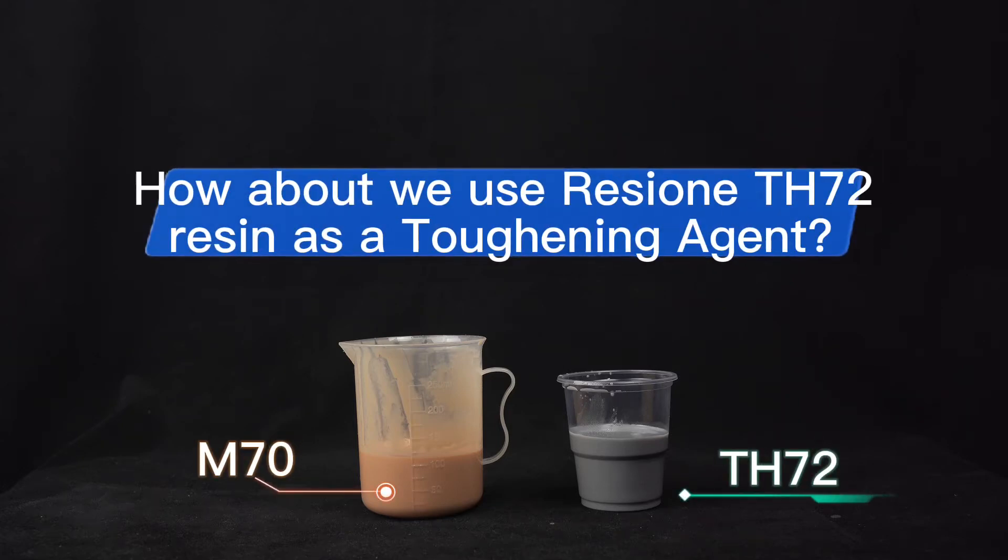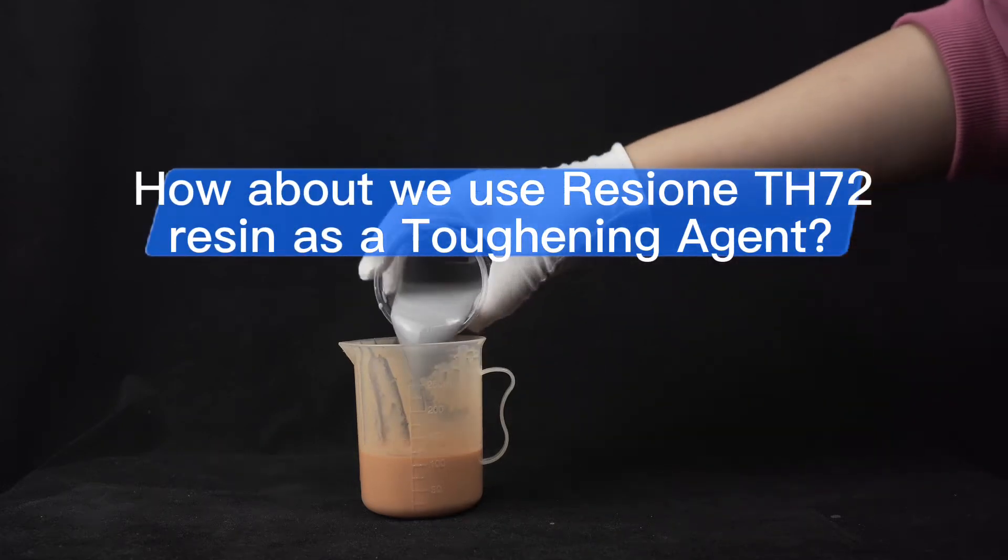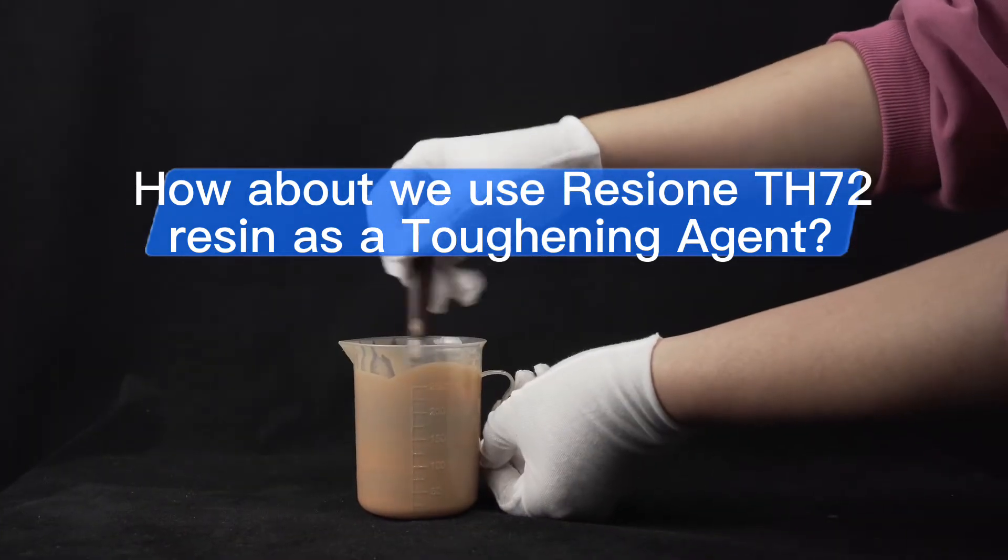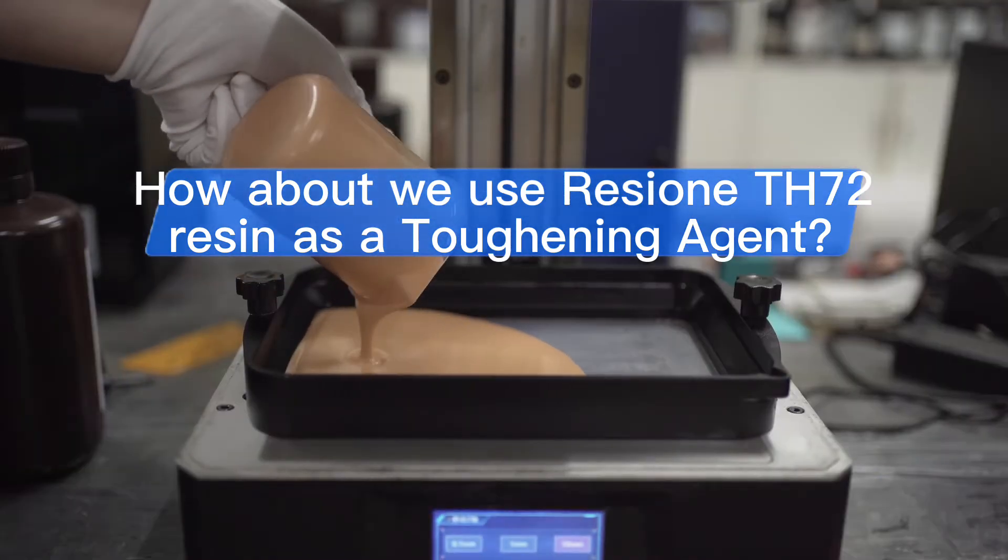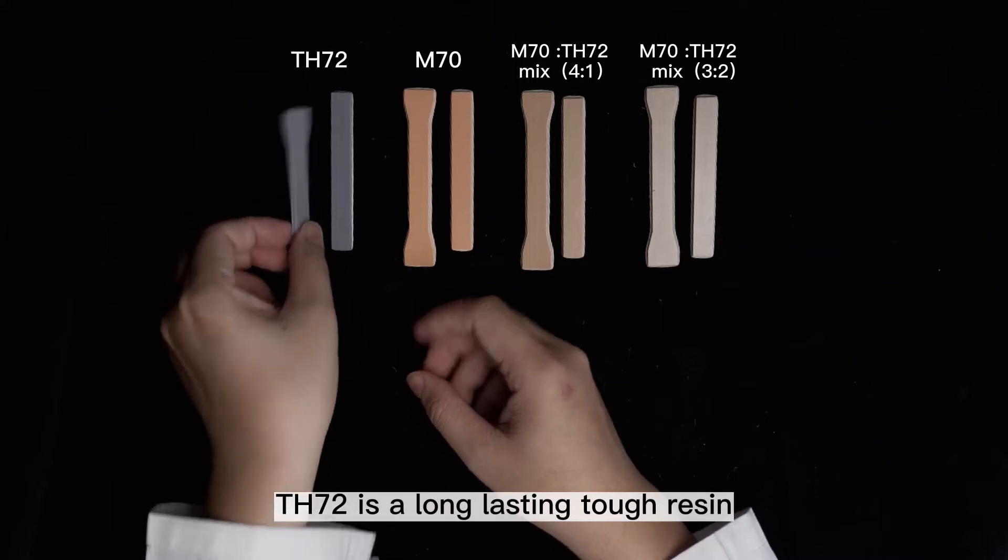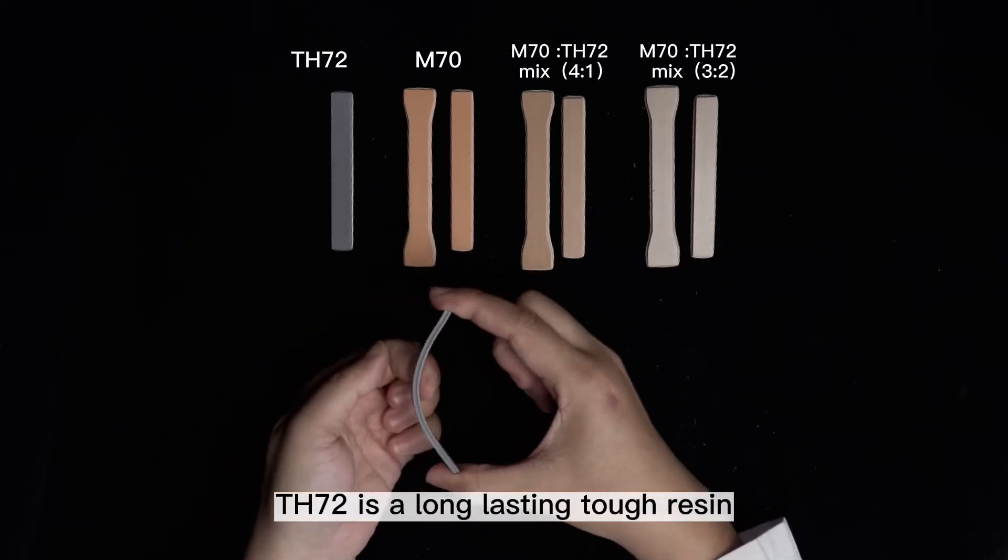How about we use ResiOne TH72 resin as a toughening agent? TH72 is a long-lasting tough resin.